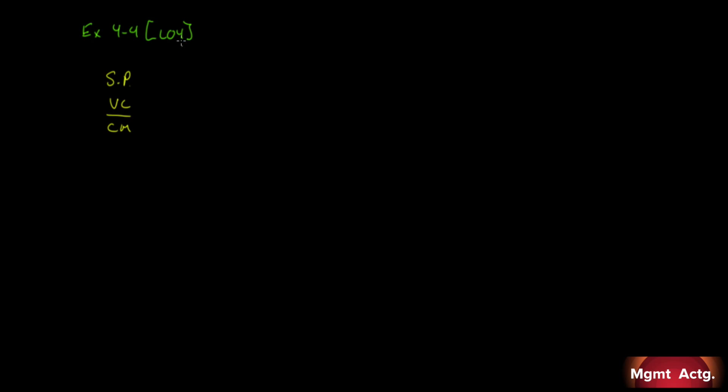Selling price, variable cost, contribution margin. We're told our selling price per unit is $90. Our variable cost per unit is $63, so that our contribution margin per unit is $27. When we look at it in terms of percent, we have 100% on sales, 70% is our variable expense ratio, 30% is our contribution margin ratio. So, this is the data that we're given. Fixed costs are $65,000 per month. And the company is selling 2,750 units per month. So, our volume is 2,750 units. That's what we're given.